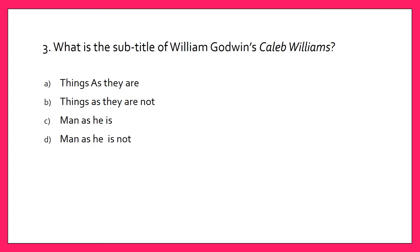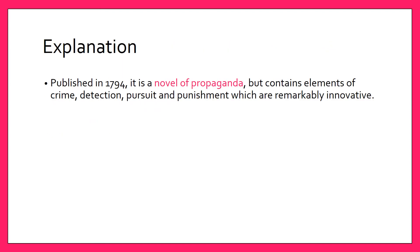What is the subtitle of William Godwin's Caleb Williams? Your options are A. Things as They Are, B. Things as They Are Not, C. Men as He Is or Men as He Is Not. The answer is A. Things as They Are. Published in 1794, it is a novel of propaganda but contains elements of crime, detection, pursuit and punishment which are remarkably innovative.